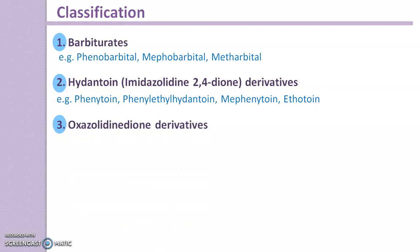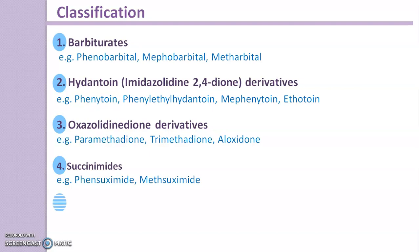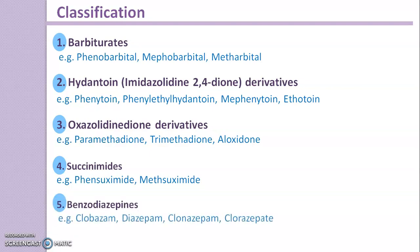The next class is Oxazolidine-Dione derivatives. Examples are Paramethadione, Trimethadione, and Aloxidone. Next is Succinimides — examples include Phensuximide and Methsuximide. Next is Benzodiazepines. Examples are Clobazam, Diazepam, Clonazepam, and Clorazepate.